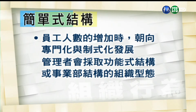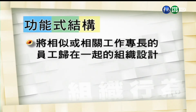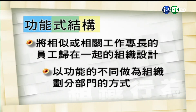当组织走向官僚化时，管理者会采取功能式的结构或者说事业部的结构这种组织形态。那么第二个，功能式的结构是指将相似或相关工作专长的员工归在一起的组织设计，也就是说纯粹以功能的导向来作为组织划分部门的方式。